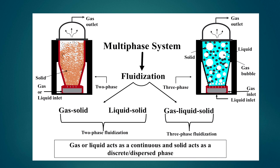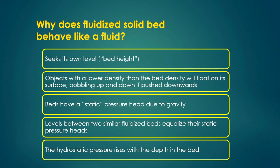In liquid-solid fluidization, solid particles are suspended under the flow of liquid — this is called two-phase fluidization. In three-phase flow, solid particles are suspended or driven by both gas and liquid flow — this is called gas-liquid-solid fluidization. So there are two categories: two-phase and three-phase fluidization. Gas or liquid acts as the continuous phase, and solids act as the discrete or dispersed phase. This is therefore regarded as a multiphase system or operation.